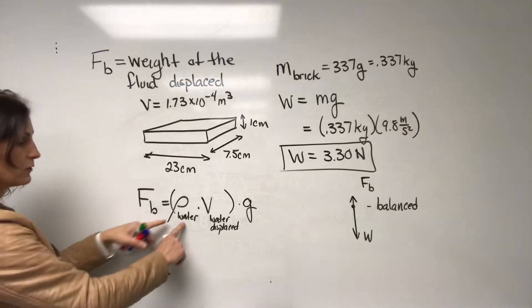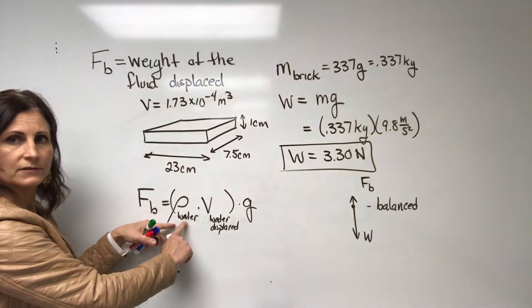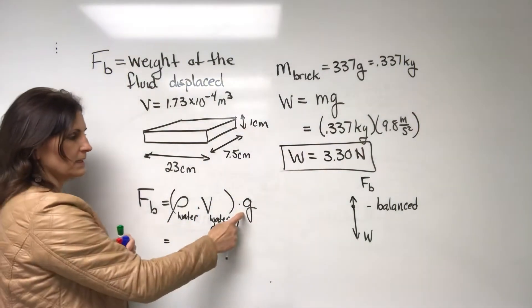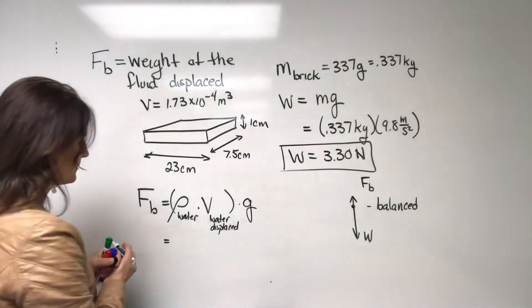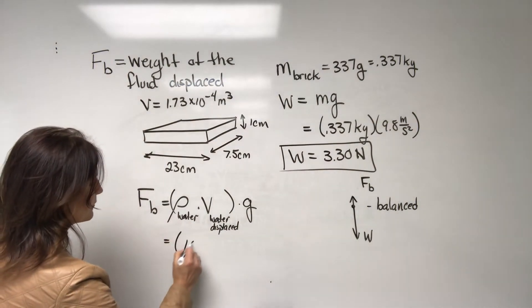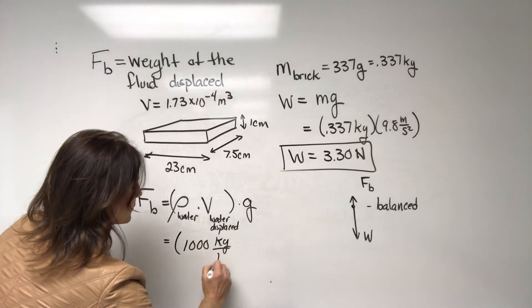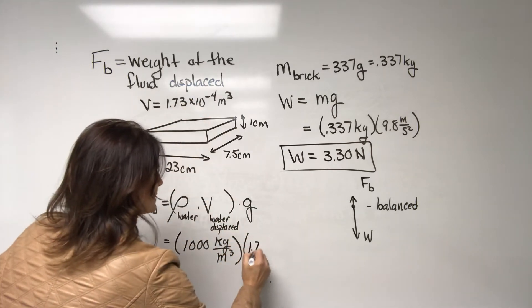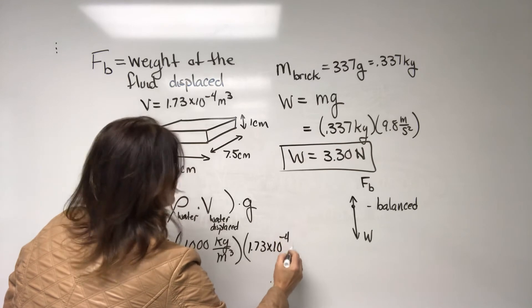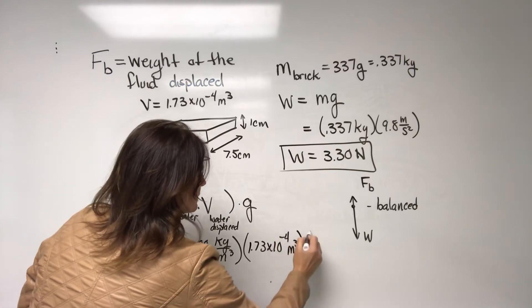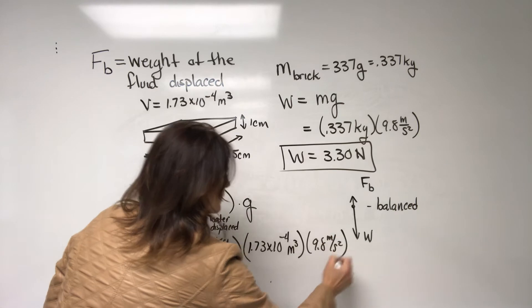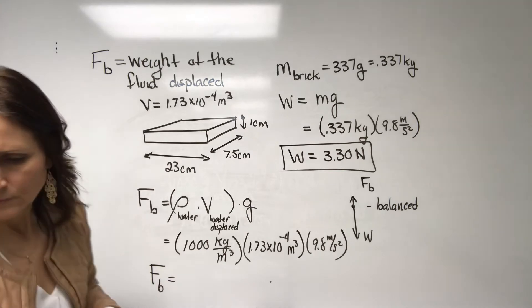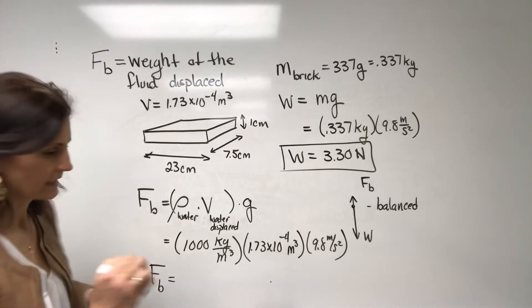So you can look up online easily. The density of water is 1,000 kilograms per meter cubed. We're going to use the kilograms and the meters cubed to keep g at 9.8 meters per second squared.